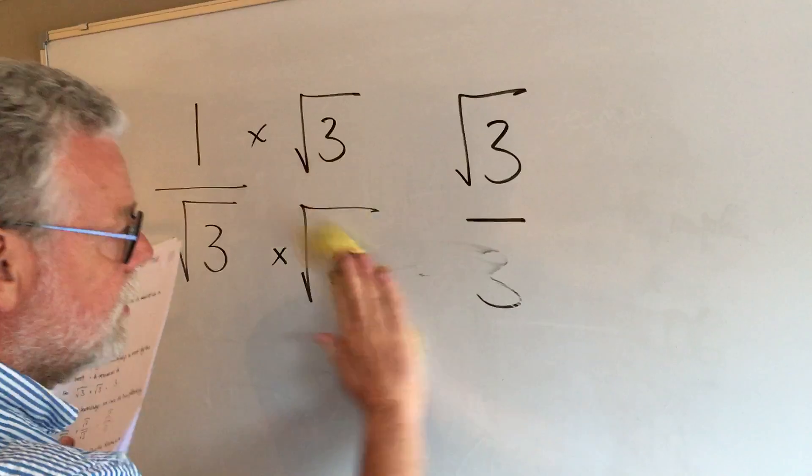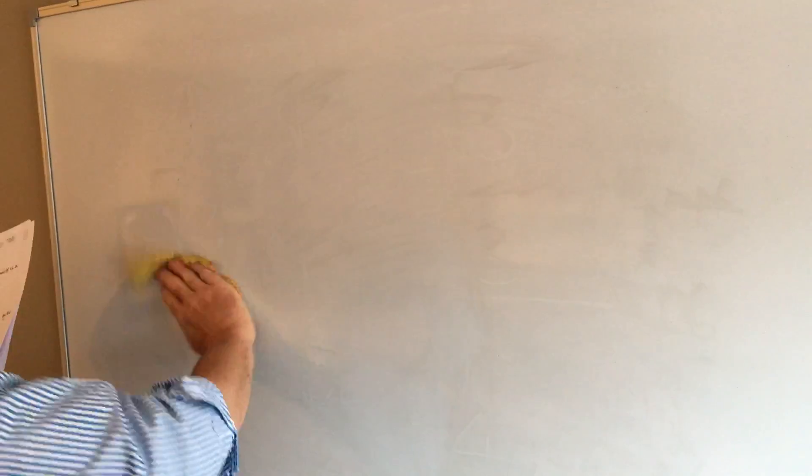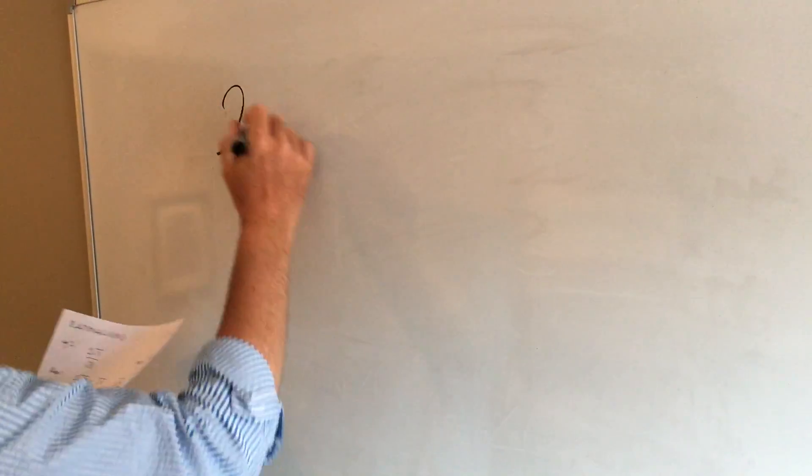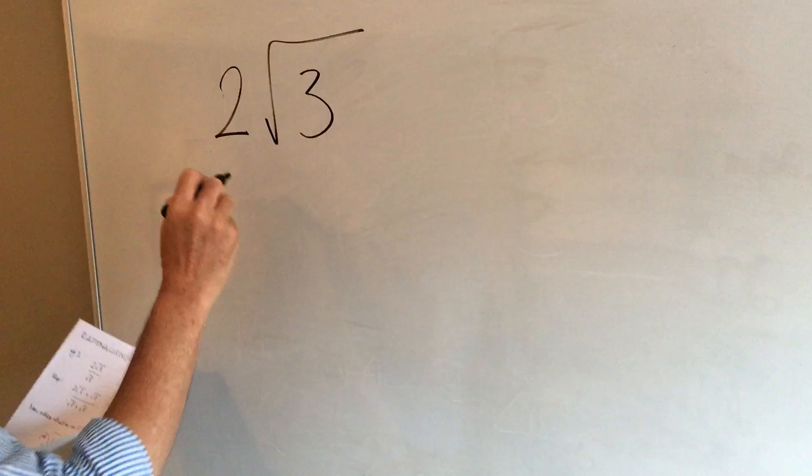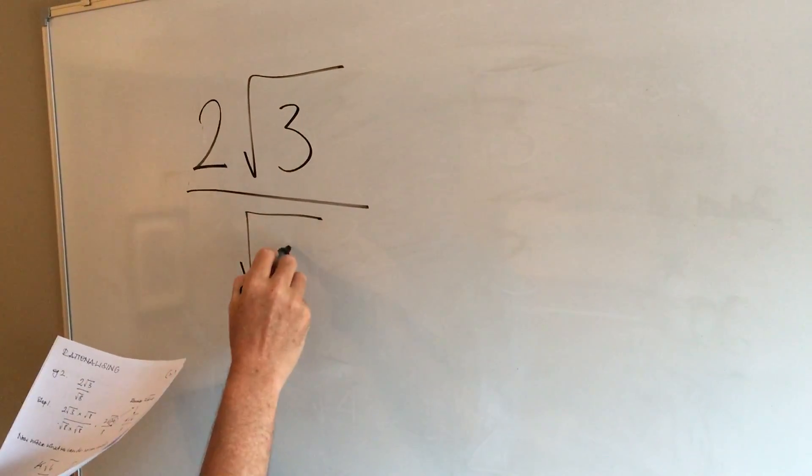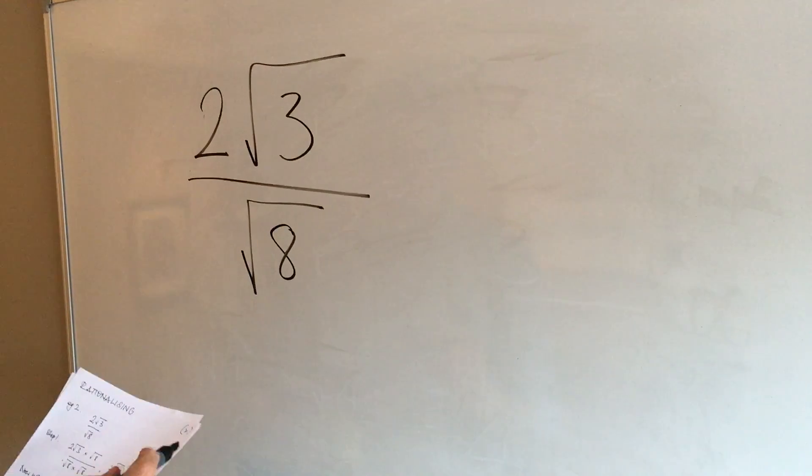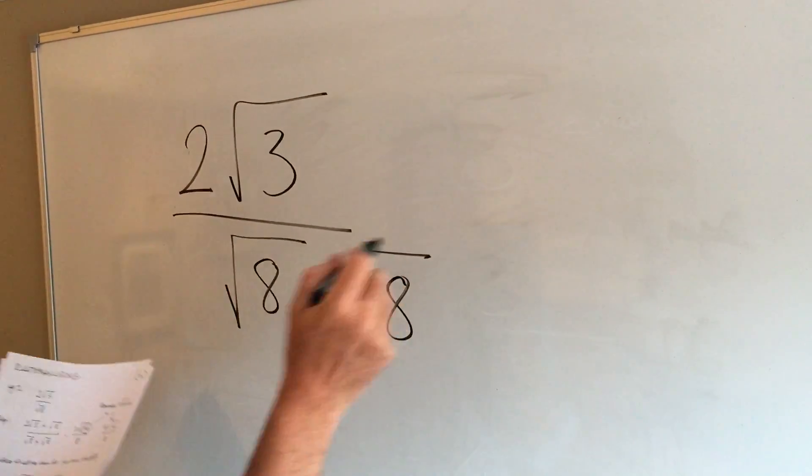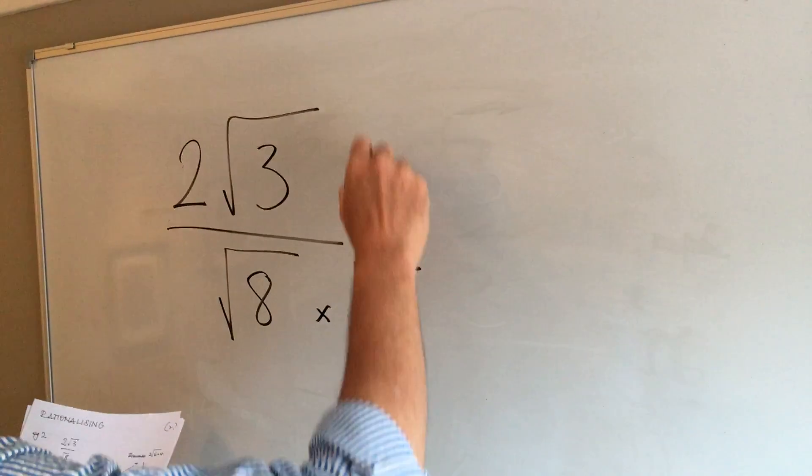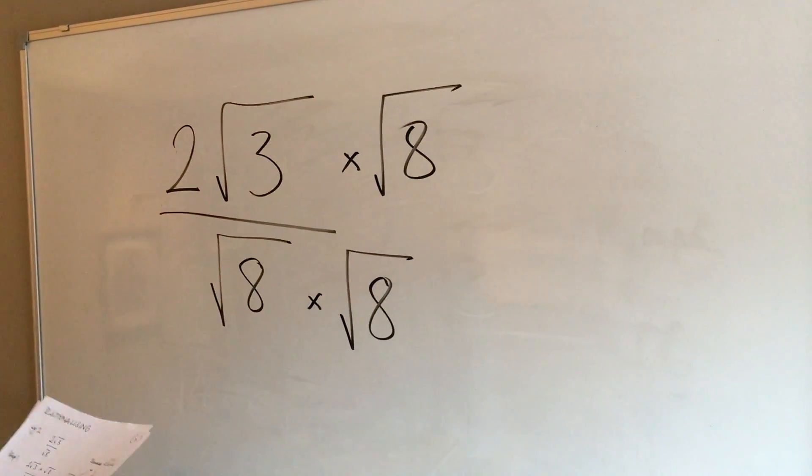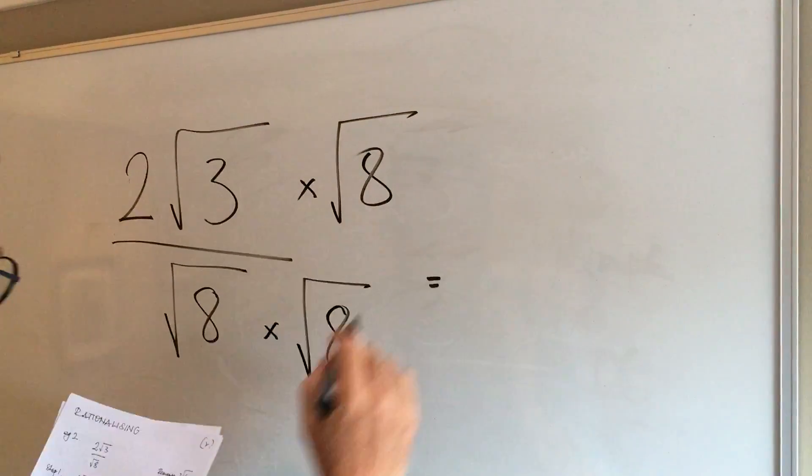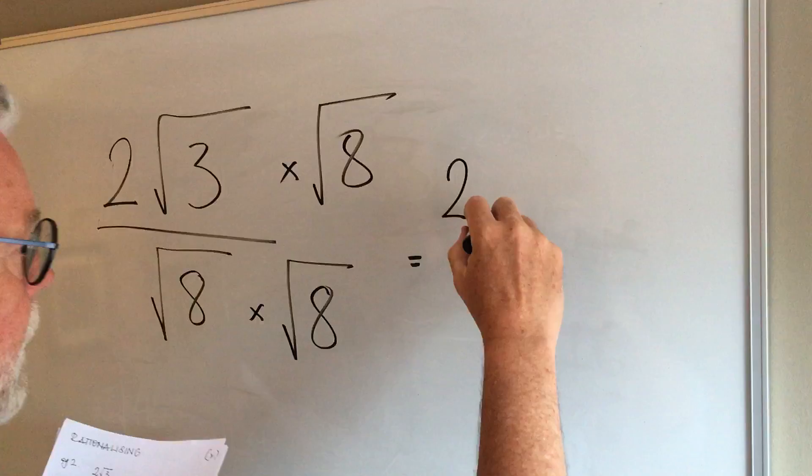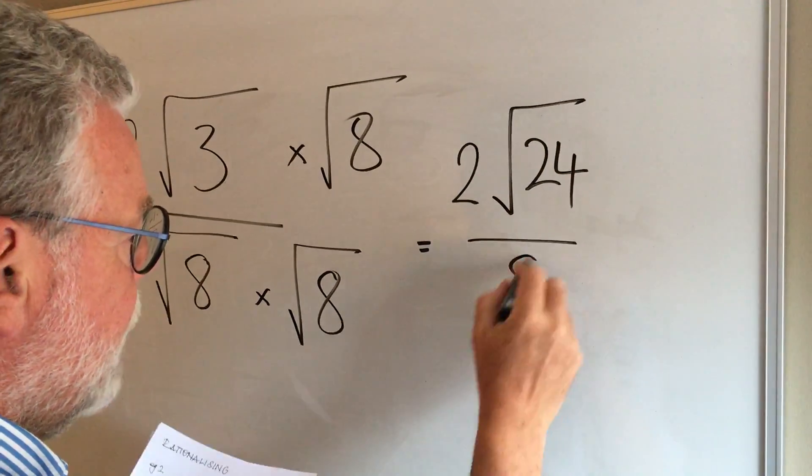Let's just have a look at a slightly more complex example. This time we've got 2 root 3 over root 8. We know what we're going to do, we're going to multiply that to get rid of the root, but whatever we do to that, we've got to do to that. So we multiply that. Now, what does that give us? Well, that gives us 2 root 24 over 8.